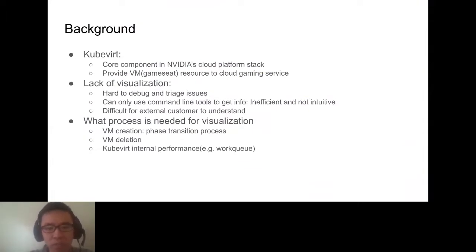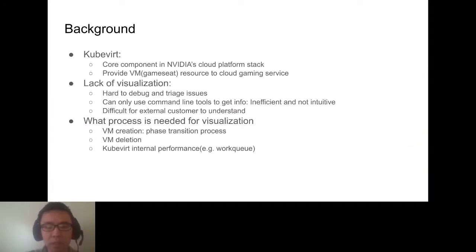We use KubeVirt to provide VM resources to the cloud gaming service. We found an issue: we lack visualizations, which makes it very hard to debug and triage issues. Usually when we have a problem, we can only use command line tools like kubectl to get info — this is inefficient and not intuitive. Our cloud team is very large with multiple teams: cloud service, validation, and SRE. External customers find it very difficult to understand how KubeVirt and our platform work, so we need better visualizations on the platform side.